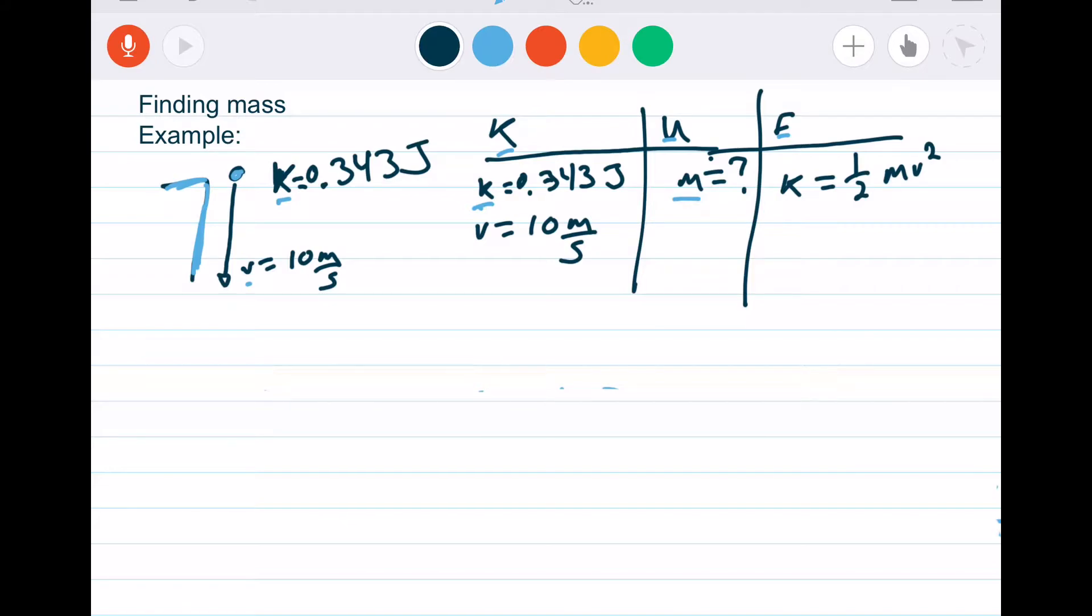An egg dropped from the second floor balcony has a speed of 10 meters per second just before it hits the ground and has a kinetic energy of 0.343 joules. What is the mass of the egg?